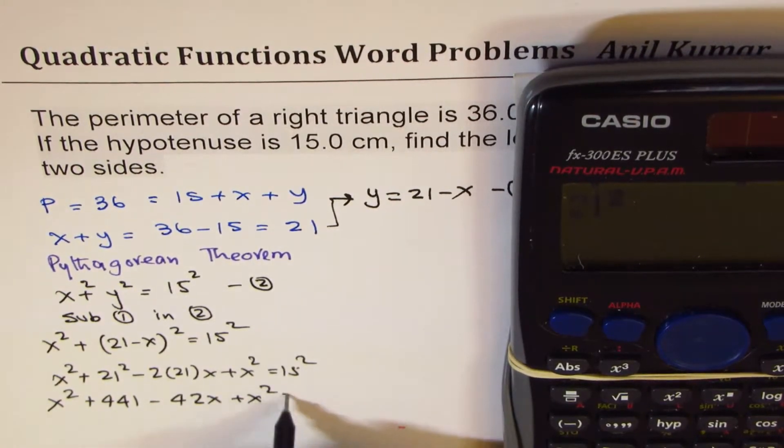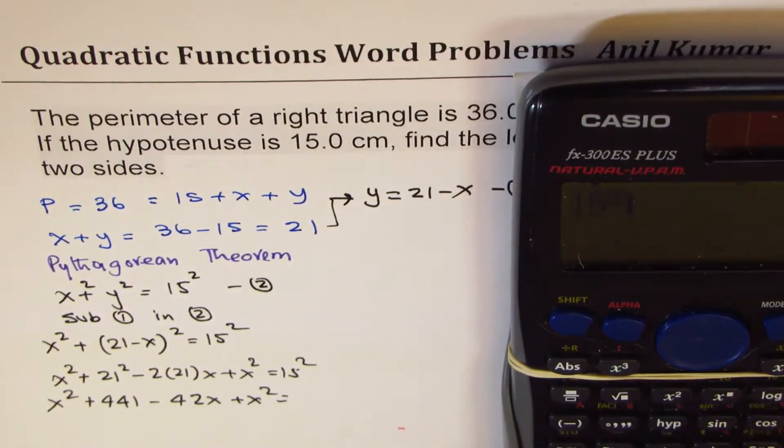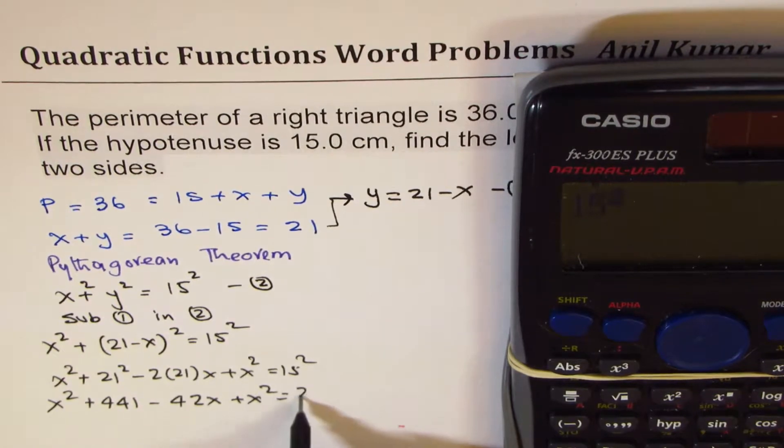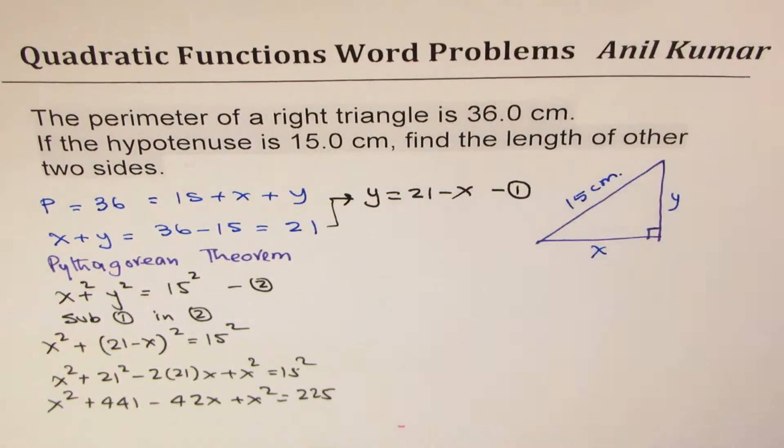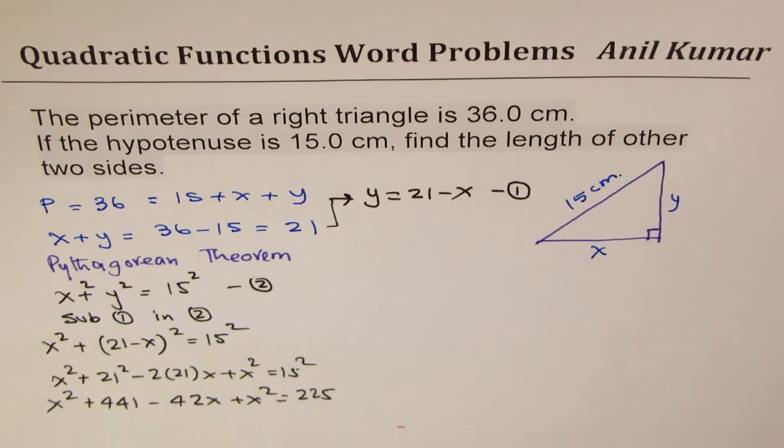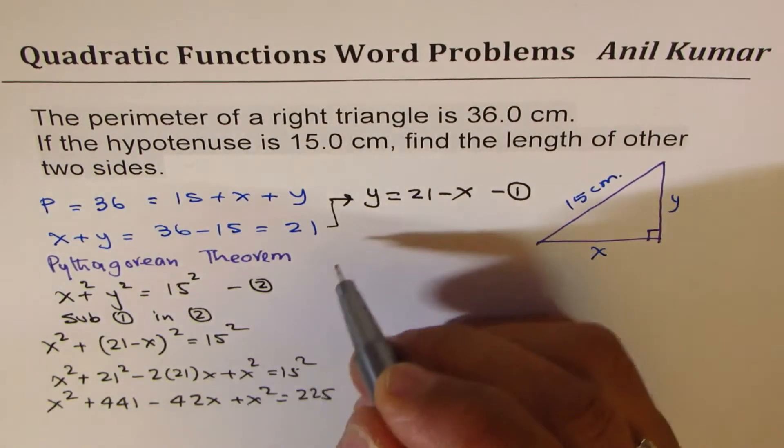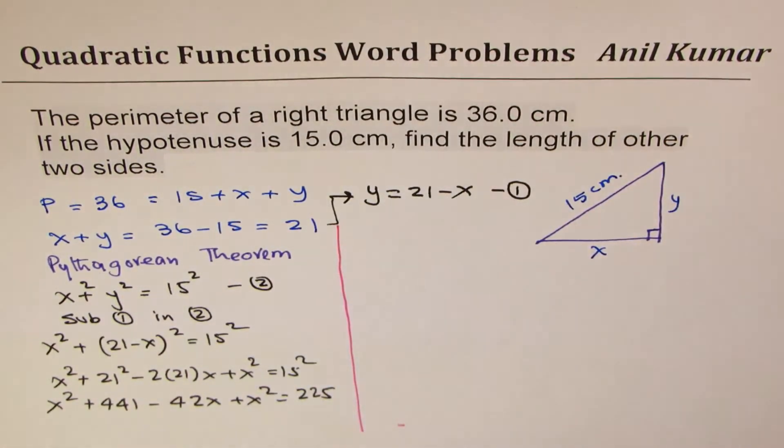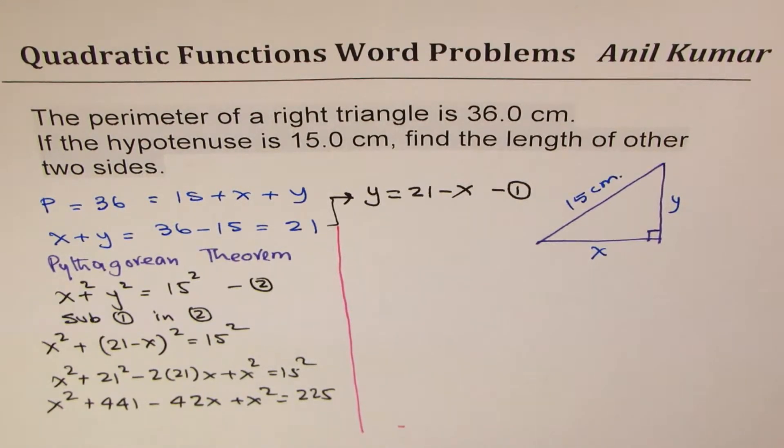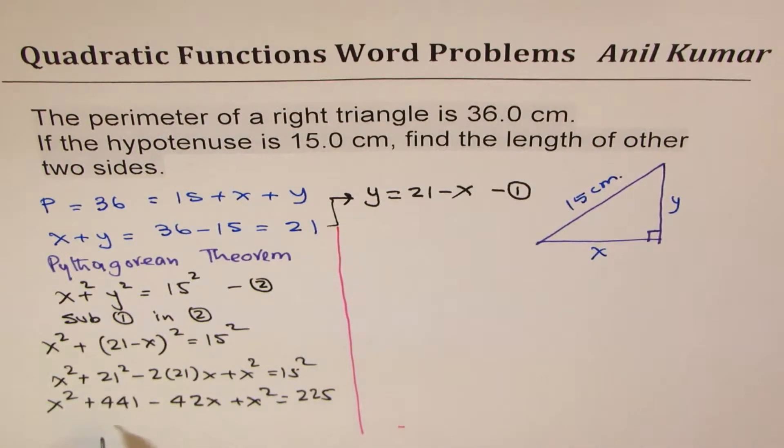So now we'll bring all the terms together on the left side. We can do completing the squares or we can just solve using quadratic formula. At this stage you have options. Let's first bring all the terms together.